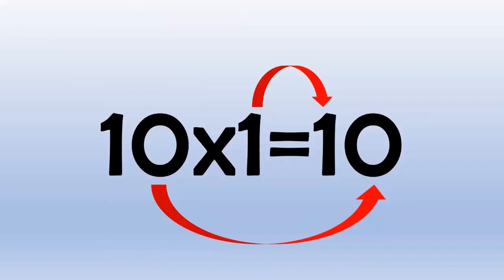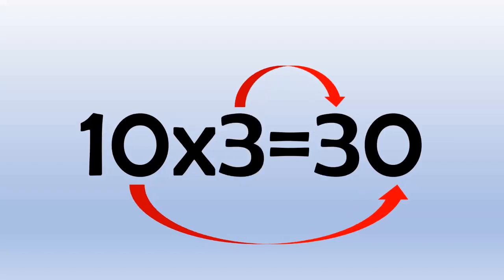10 times 1 equals 10 because 1 with a 0 on the end is 10. 10 times 2 equals 20 because 2 with a 0 on the end is 20. 10 times 3 equals 30 because 3 with a 0 on the end equals 30.